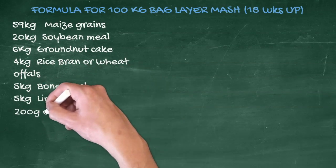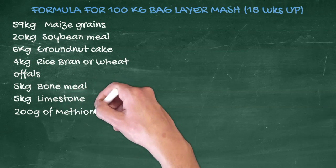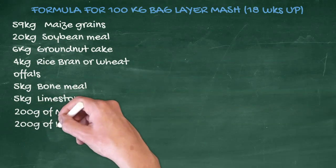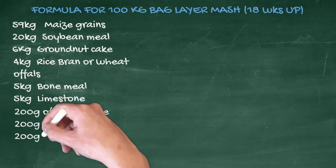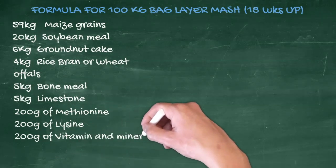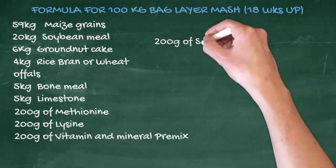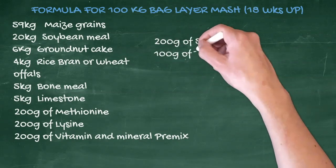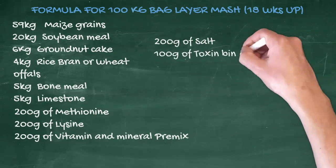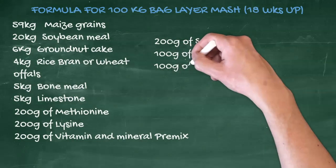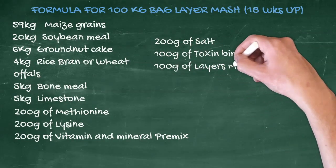200 g of methionine, 200 g of lysine, 200 g of vitamin and mineral pre-mix, 200 g of salt, 100 g of toxin binder, 100 g of layers mix. Total equals 100 kg.